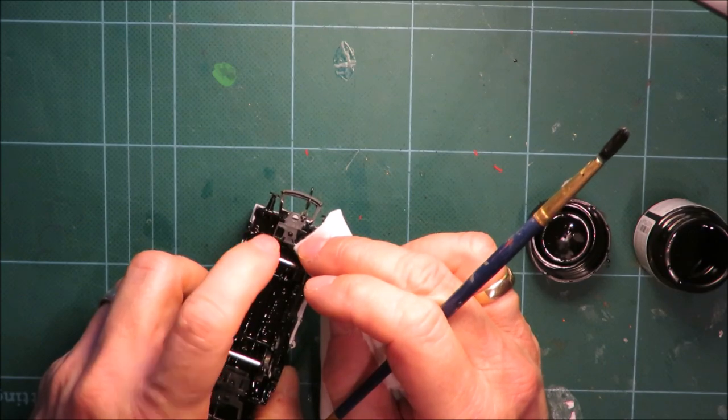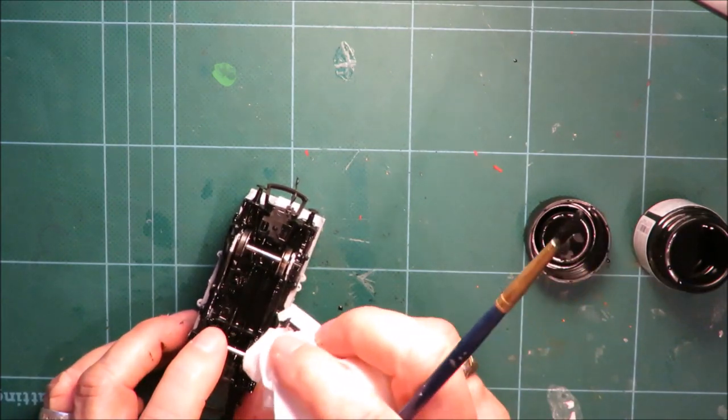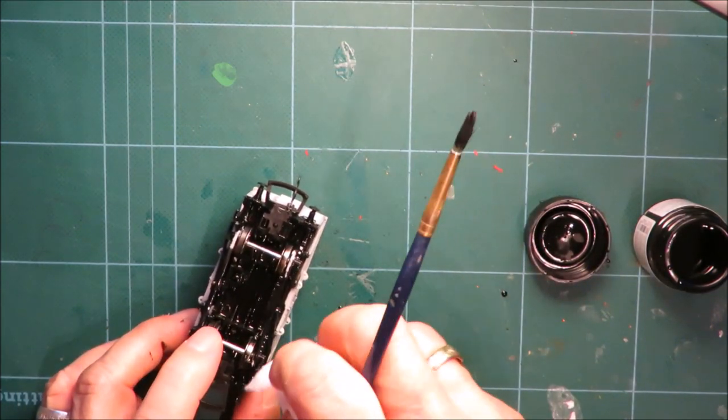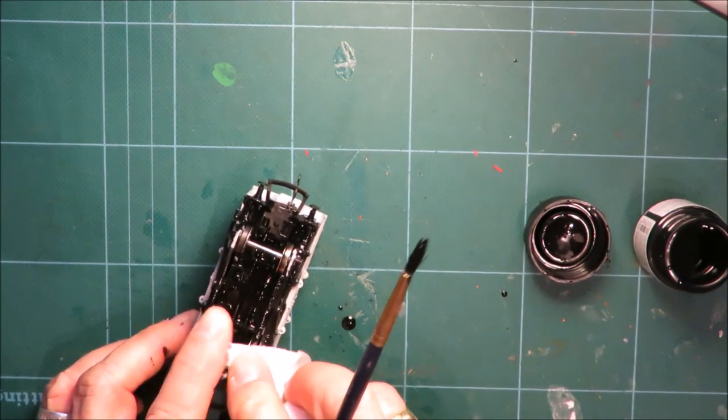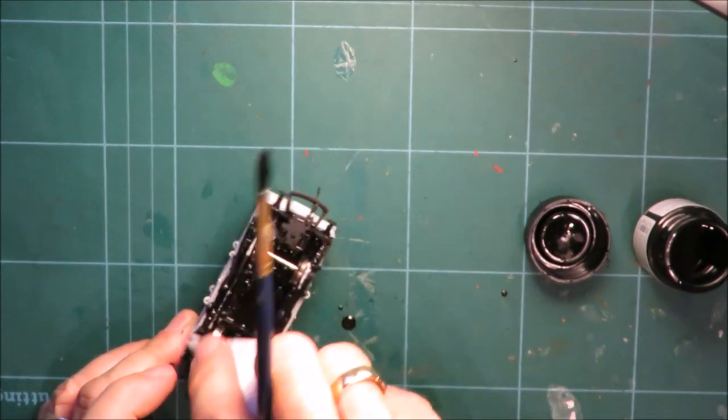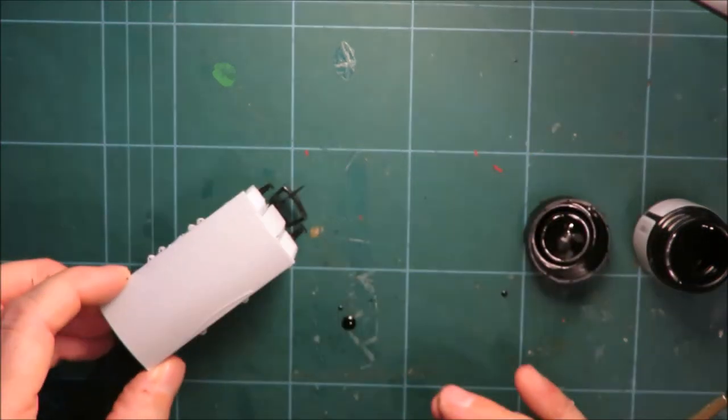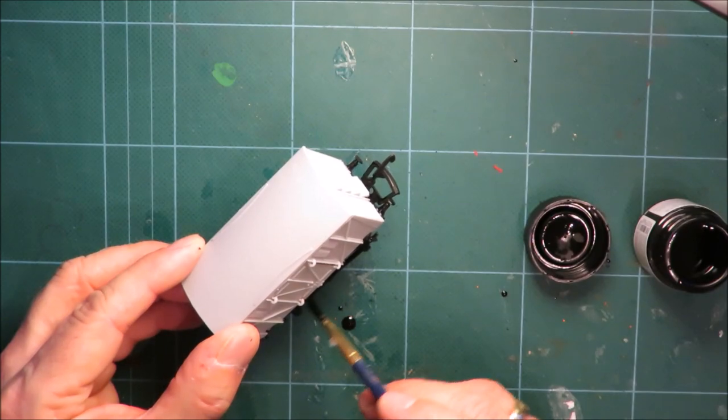I've got a bit more paint than I want on these wheels, so I'm just cleaning them off. As you can see, just by wiping a piece of tissue and revolving the wheel around, it's not a big problem because they're not electric conductors, so it's not really going to matter. Once it's on the track you're not really going to see it.